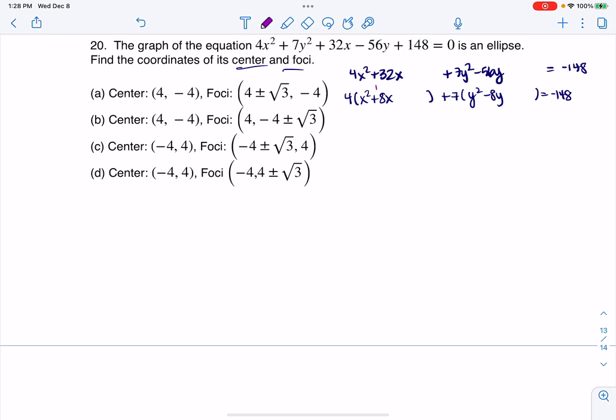If I want to complete the square, half of 8 is 4, and 4 squared is 16. But keep in mind you have 4 times 16, so I'm actually going to add 64 to the other side to balance it. Over here you have half of negative 8 is negative 4 and negative 4 squared is also 16. But I want to really add 7 times 16 to the other side to balance it, so I'm going to add 112 over here.